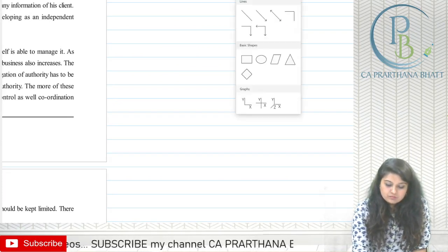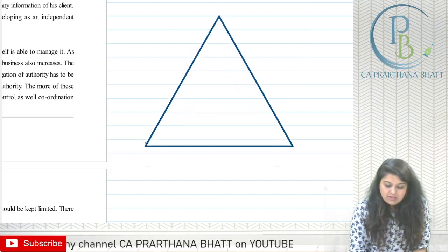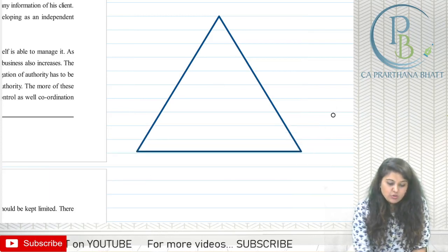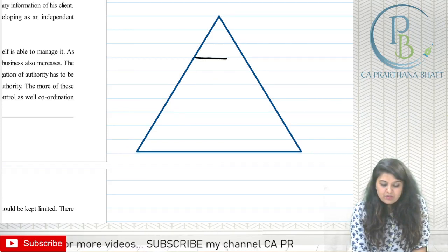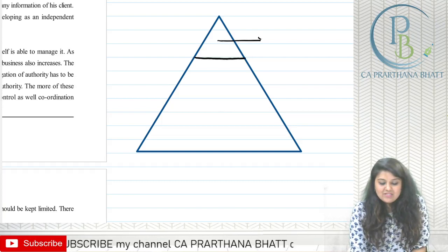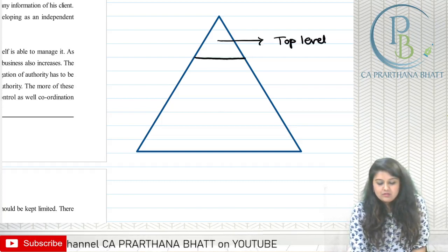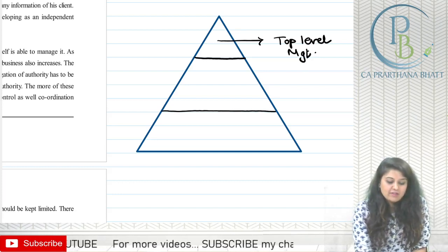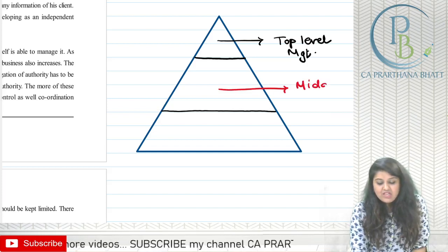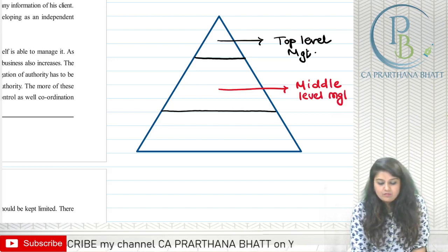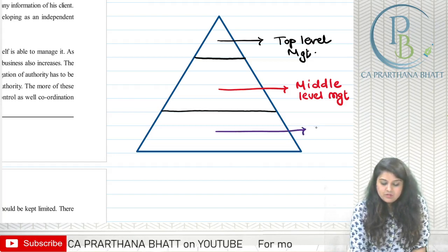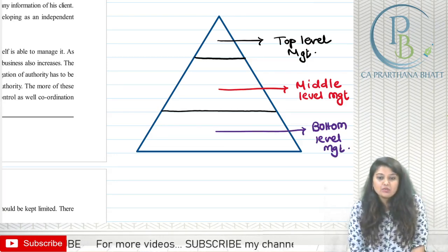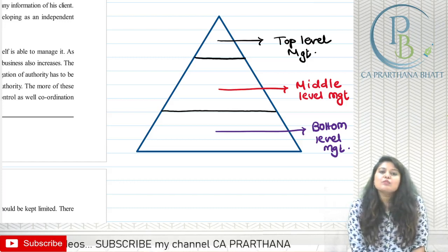I am drawing a triangle, same as in your textbook. The upper part of the triangle represents top level management, the middle portion is middle level management, and the lower wide part is bottom level management. I will explain each and then give a practical example as well.